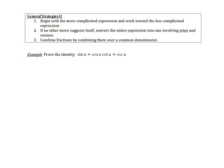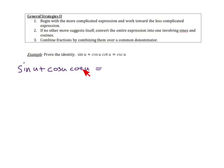Some other general strategies: when we start with one side, we usually want to begin with the more complicated side and work toward the less complicated side. We can always change things into sines and cosines — that can be very useful. If we have fractions, it's useful to combine them. So let's try an example. We want to start with the more complicated side, which is: sine of u plus cosine u times cotangent u. We might think about factoring, but there are no common terms, so let's change cotangent into sines and cosines.